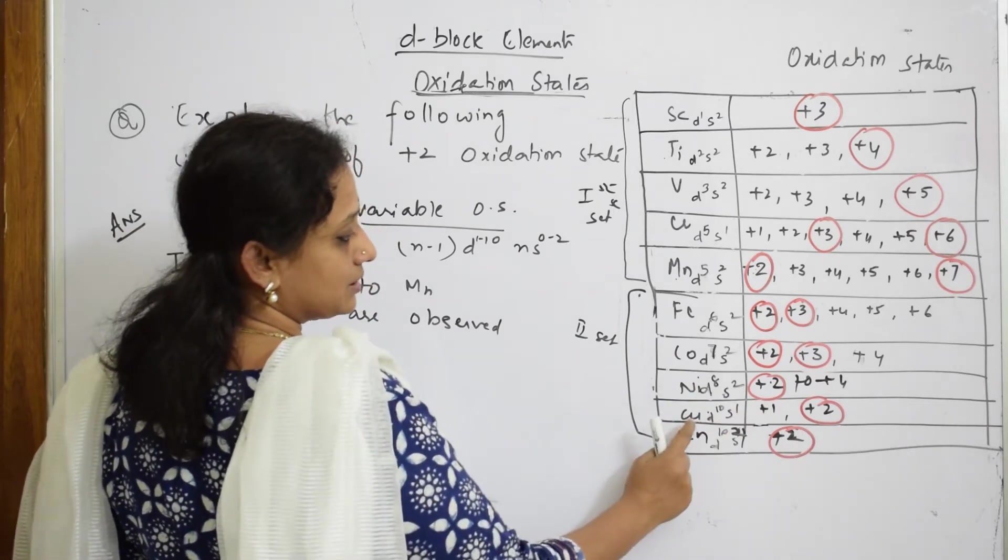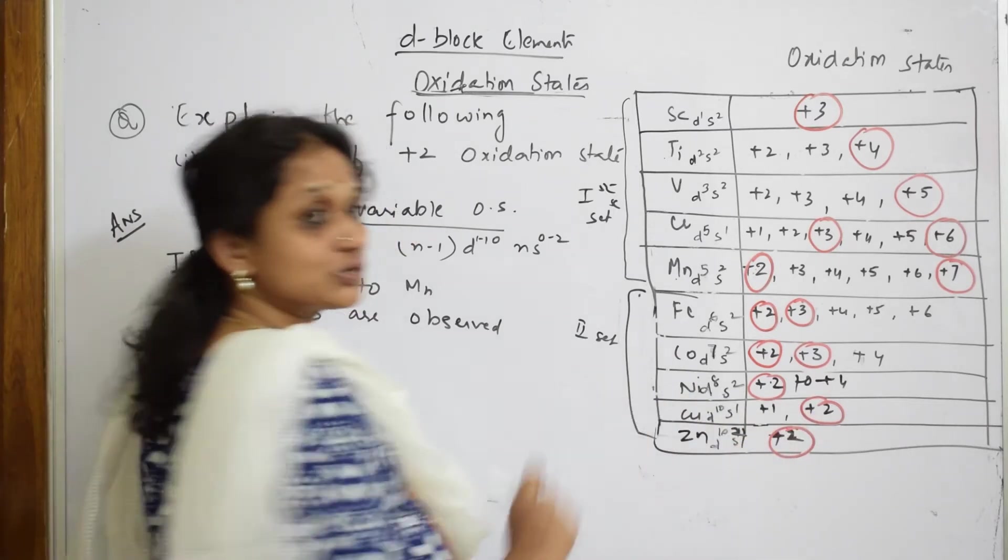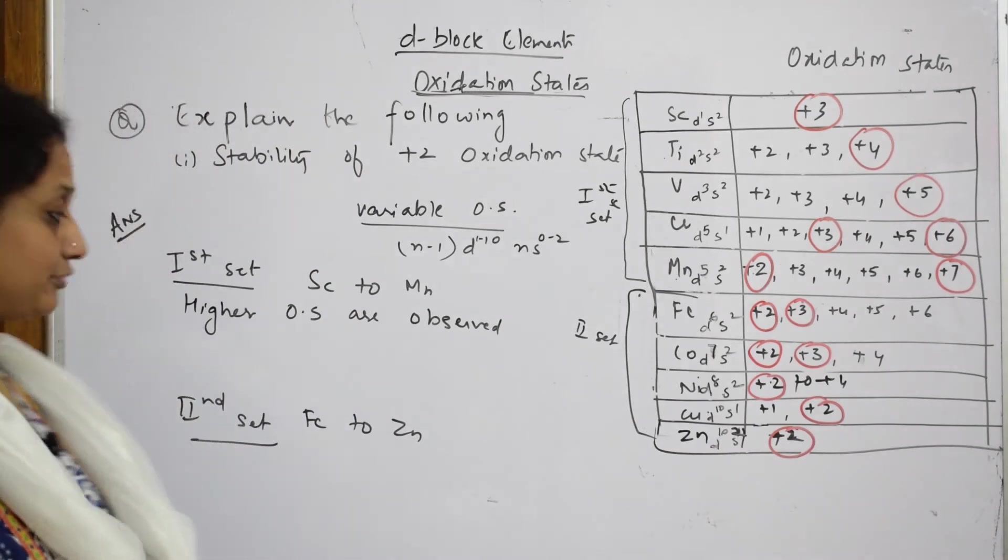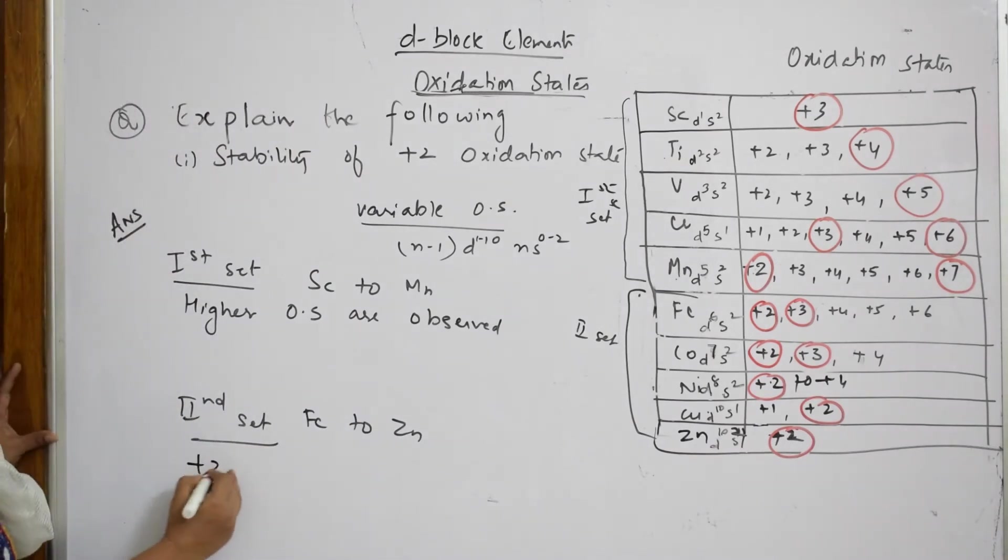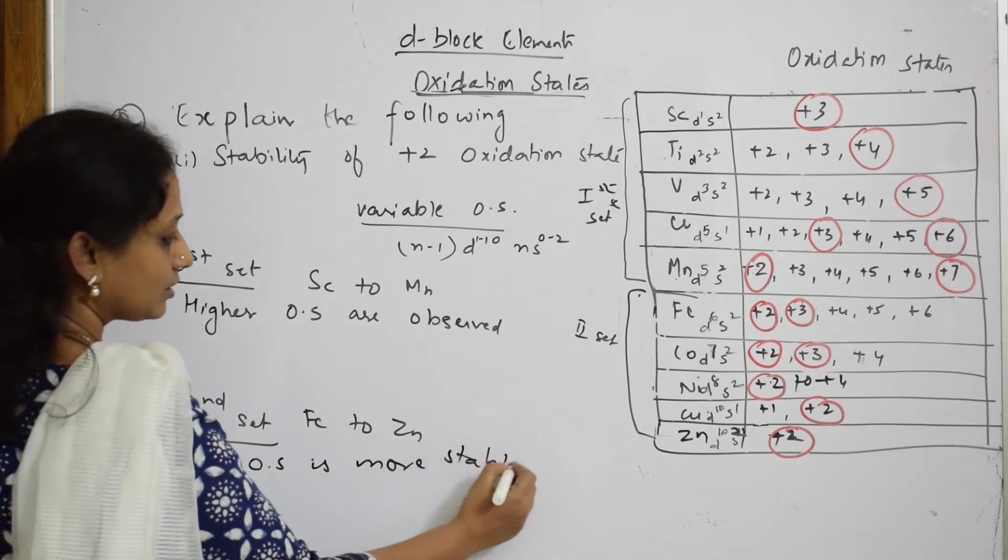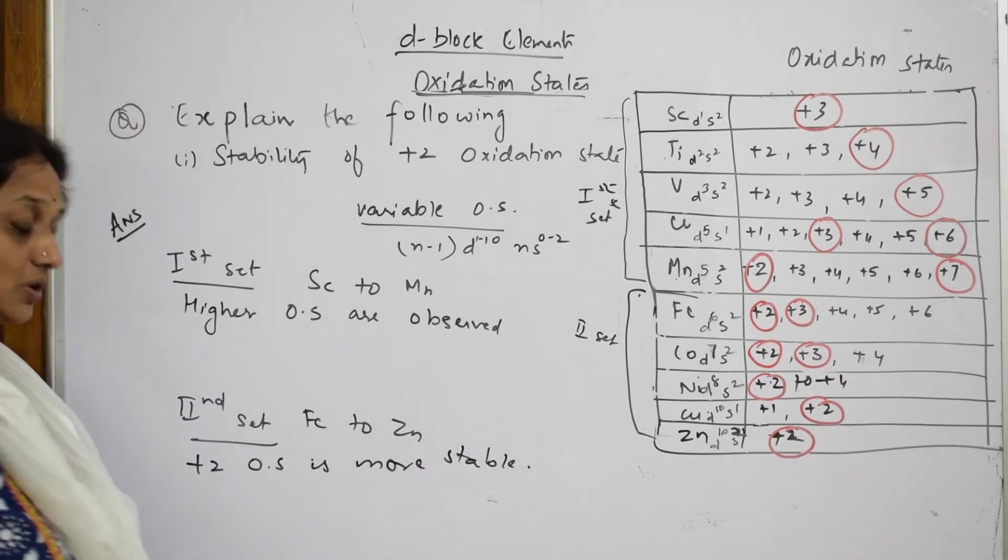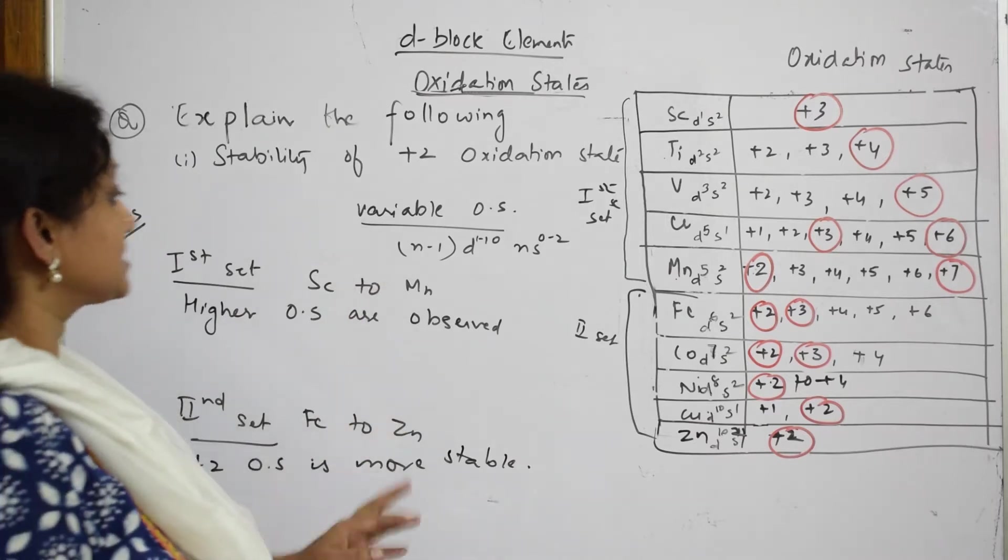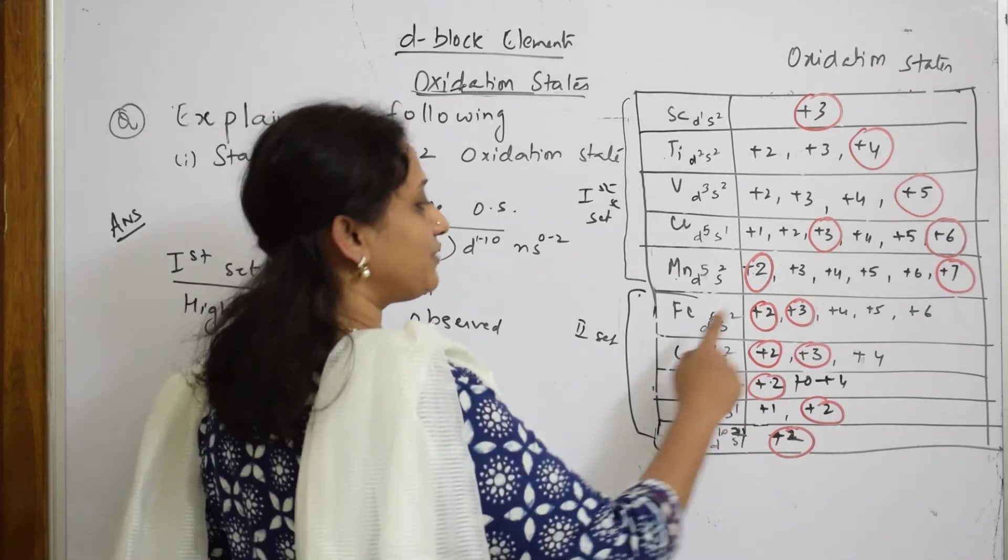Now when I'm proceeding to the second set, what are you observing? Fe +2 is stable, cobalt +2 is stable, nickel +2 is stable, copper +2 is stable, zinc +2 is stable. So in lower end of the series, +2 oxidation state is more stable.